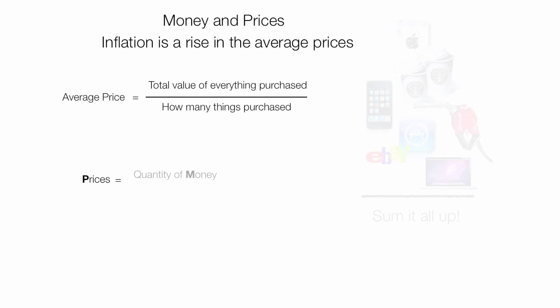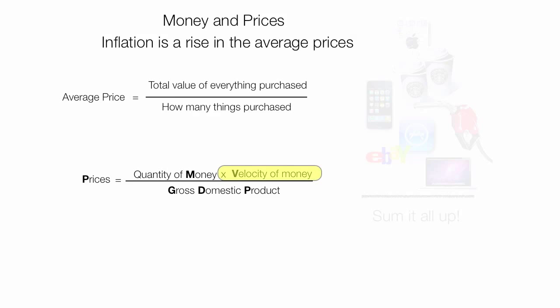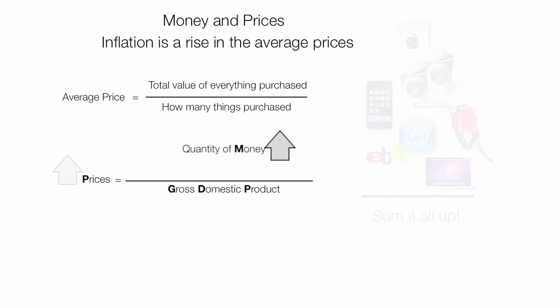A textbook definition: prices equal the quantity of money times the velocity of money — how many times it changes hands per unit of time — divided by a country's output, also known as gross domestic product. This gives us the average price for all goods and services in the economy. If we ignore velocity for now, when the quantity of money increases relative to GDP, prices must increase as well. One popular theory is that inflation is caused by an increase in the quantity of money.